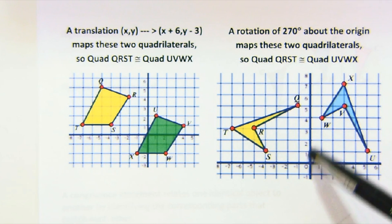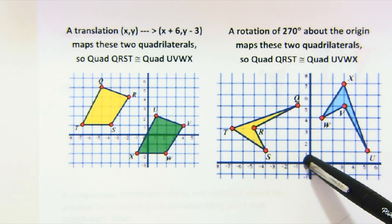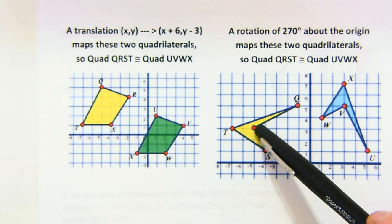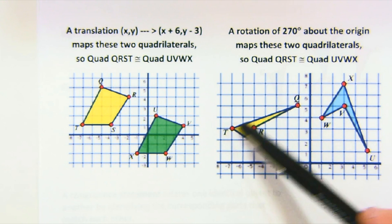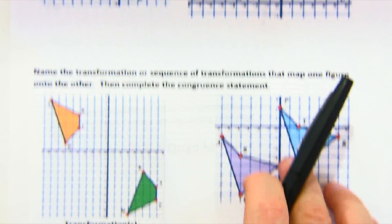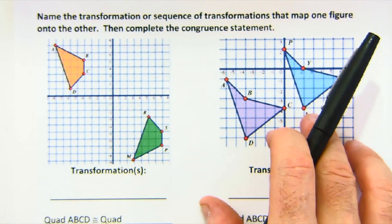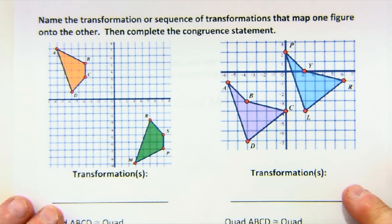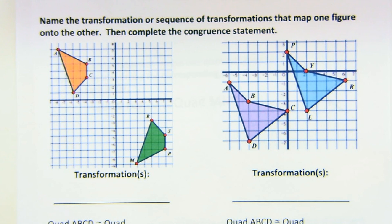Here's another example where a rotation about the origin of 270 degrees would map QRST all the way around onto UVWX. So again, one transformation provides a congruence or a sequence. Here, this says name the transformational sequence that maps one onto the other. In this kind of environment, there's often more than one correct answer.